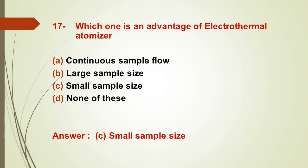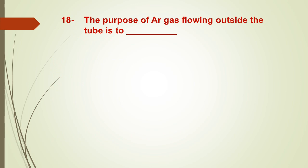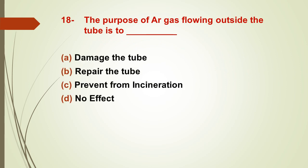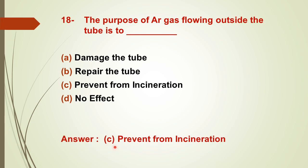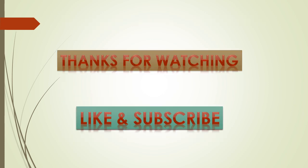Question number eighteen: the purpose of argon gas flowing outside the tube is to dash — options: A) damage the tube, B) repair the tube, C) prevent it from incineration, D) it has no effect. The right answer is C — to prevent incineration. Argon gas flows outside the tube to prevent the tube from burning up.